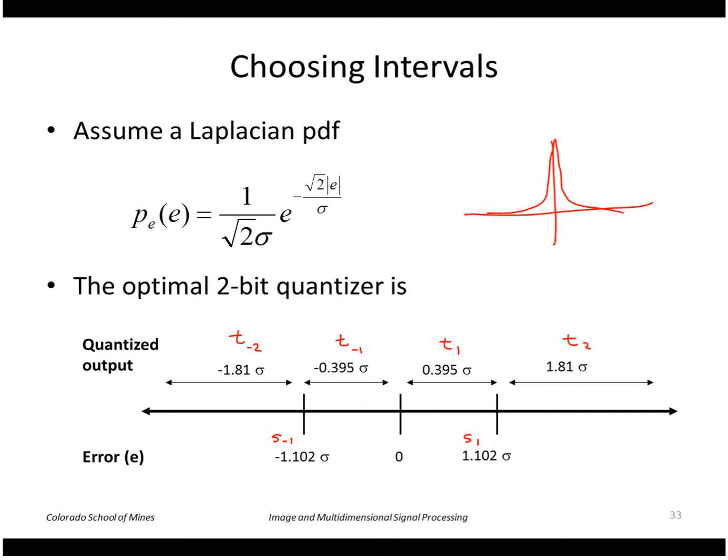So we pick the number of bits we want. If we pick two bits, that means we want four output values. Let's say t minus 2, t sub minus 1, t1 and t2. And in that case we'll assign t1 to cover anything between the input of 0 to 1.102, and we're scaling everything to the sigma of this PDF.